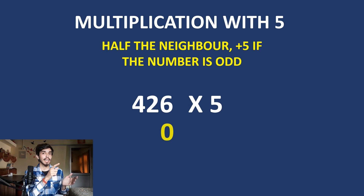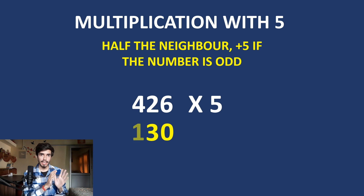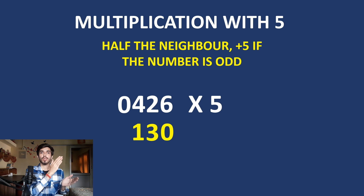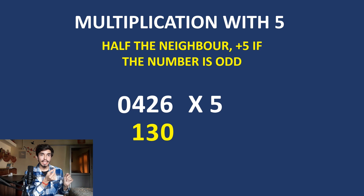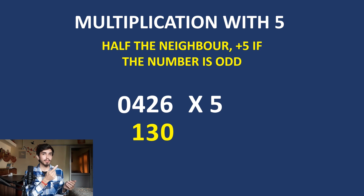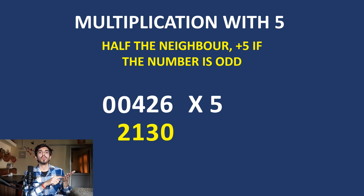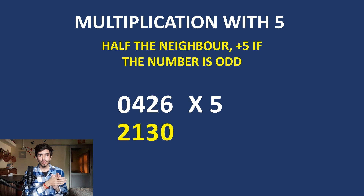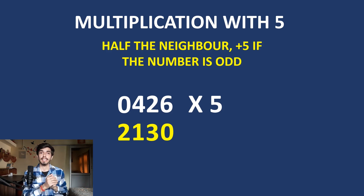For 6, it has no neighbor, so 0. For 2, the neighbor is 6, so half of 6 is 3. For 4, the neighbor is 2, so half is 1. There is always a 0 in front of 4 because 0 has a neighbor, so we take half of the neighbor which is 2. The answer is 2130. You just needed to add one leading 0 to apply the key.